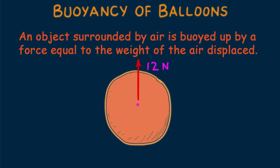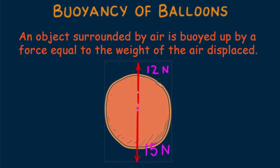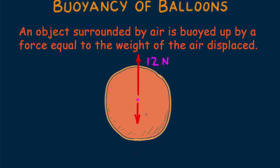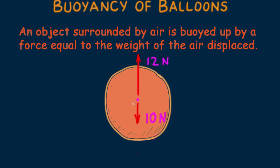If the mass of the one cubic meter object is greater than 1.2 kilograms, which is to say has a weight greater than 12 newtons, it will fall to the ground when released. If it has a mass less than 1.2 kilograms, that's less than 12 newtons, it tends to rise in the air.